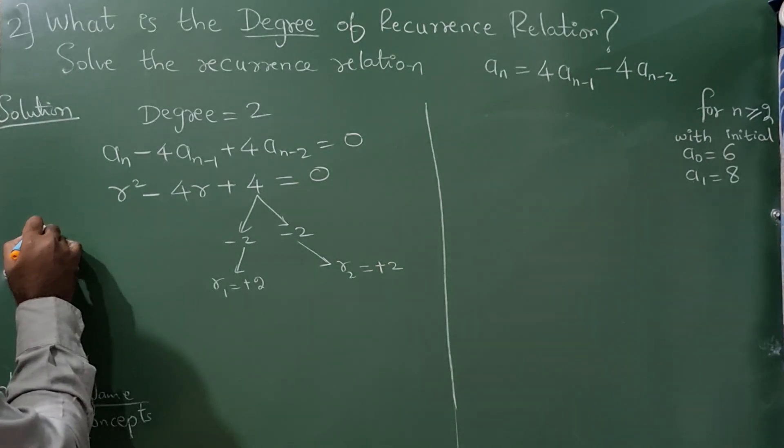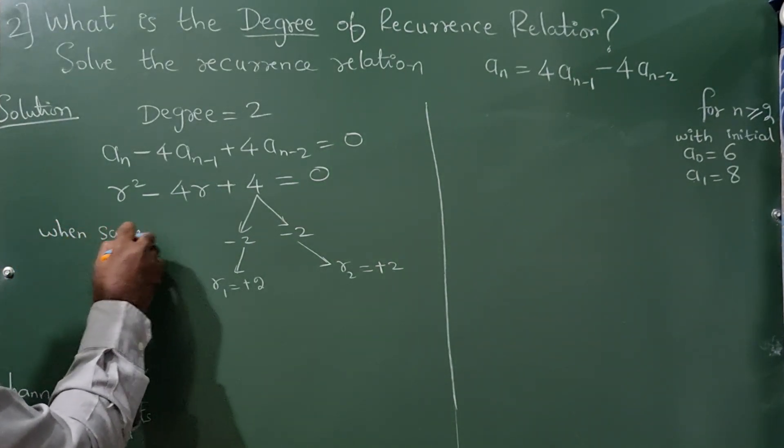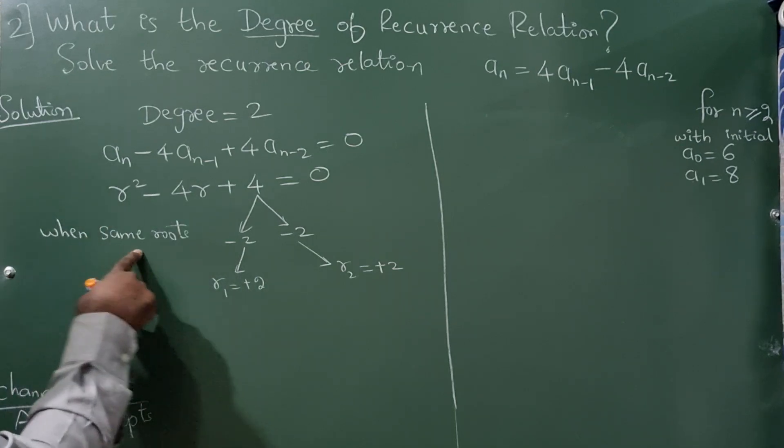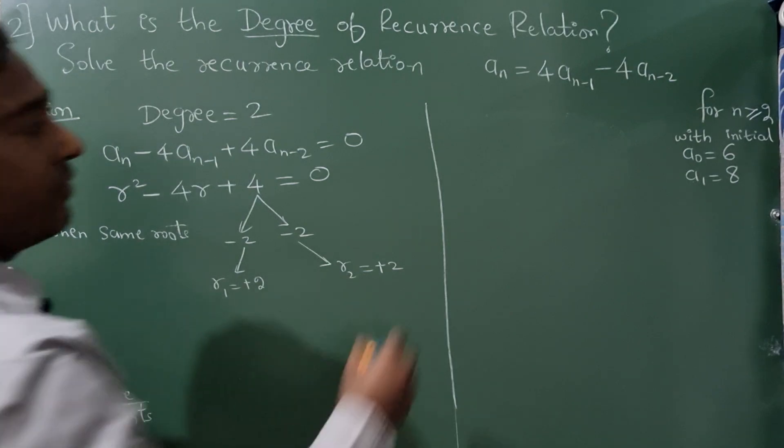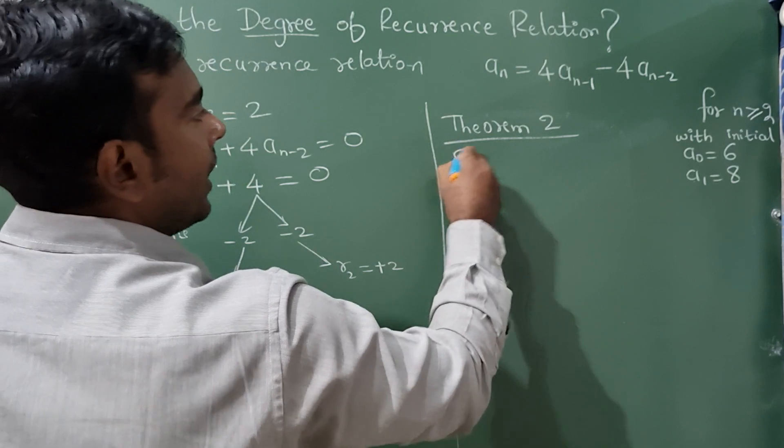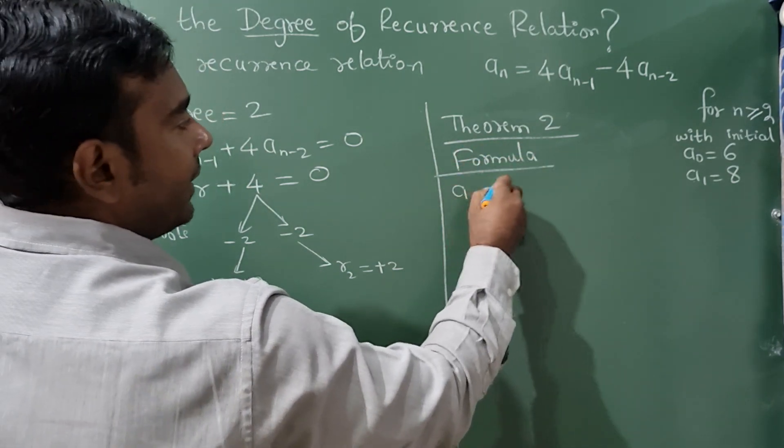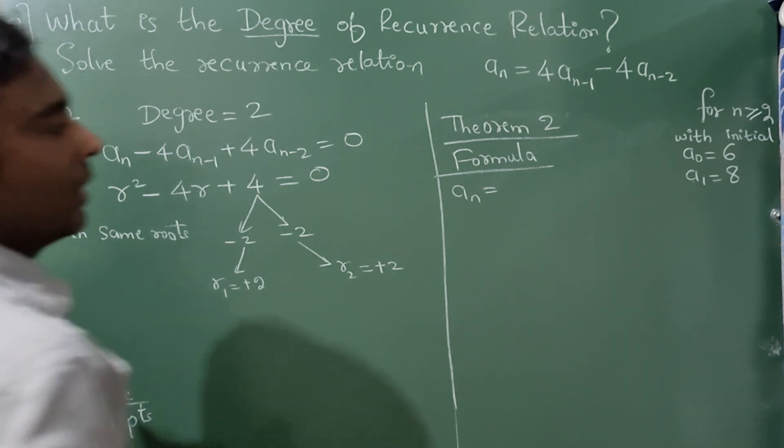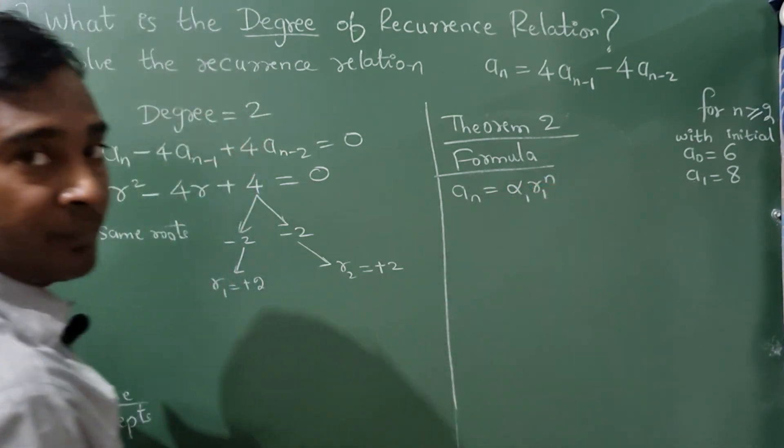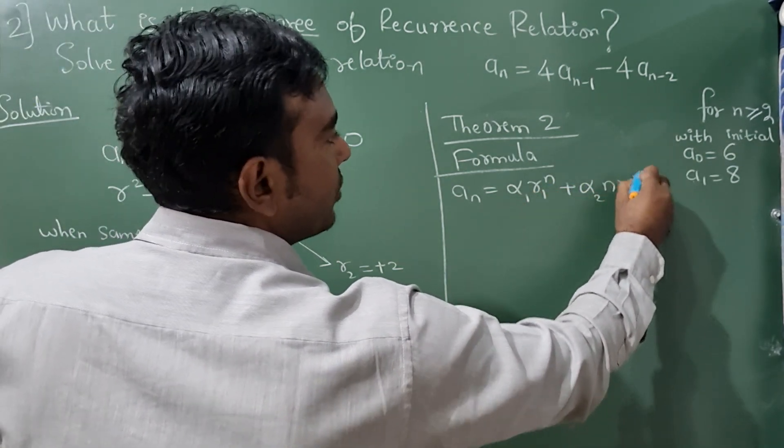Now both the roots are same. When same roots, when there are same roots, then we apply Theorem 2. And the formula for this is aₙ = α₁r₁ⁿ + α₂nr₂ⁿ.